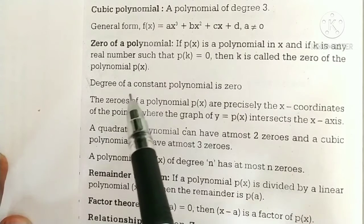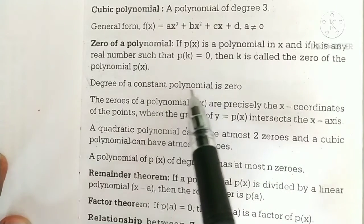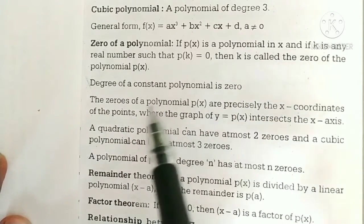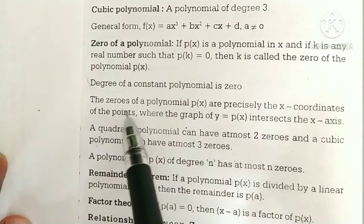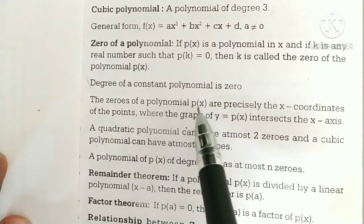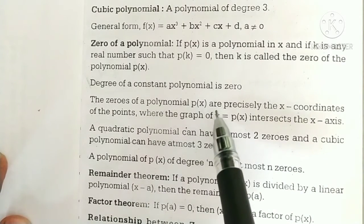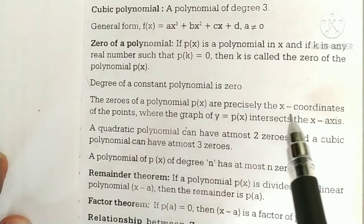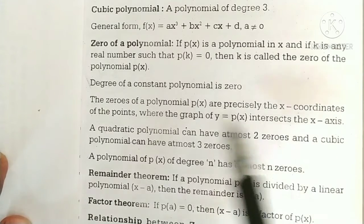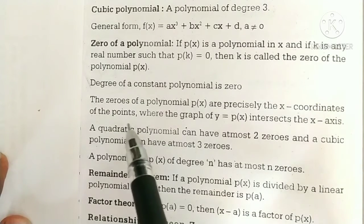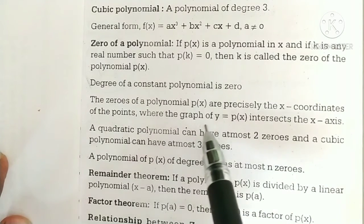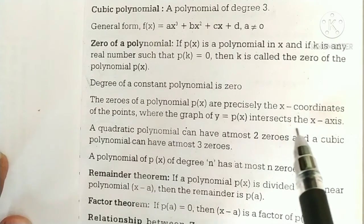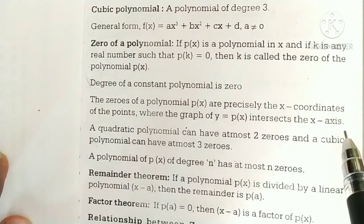Degree of a constant polynomial is 0. The zeros of a polynomial p of x are precisely the x-coordinates of the points where the graph of y is equal to p of x intersects the x-axis.